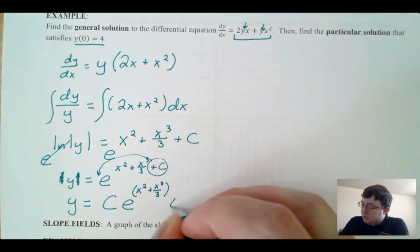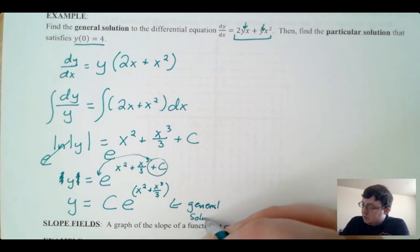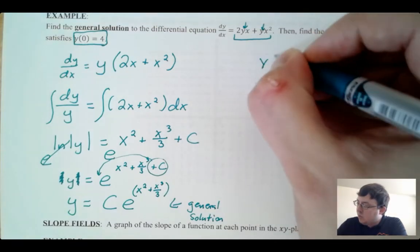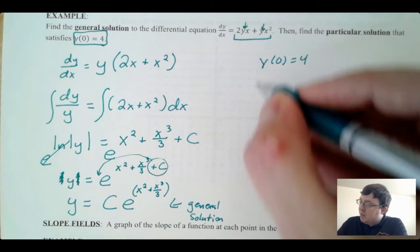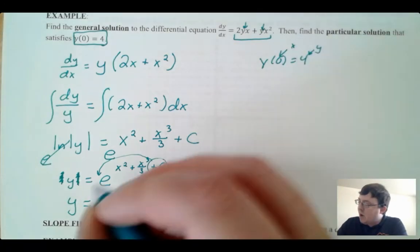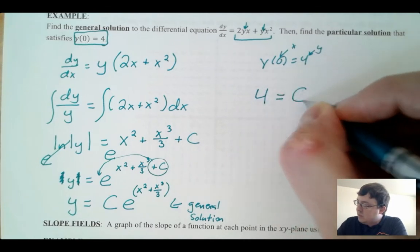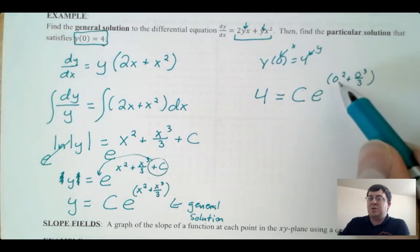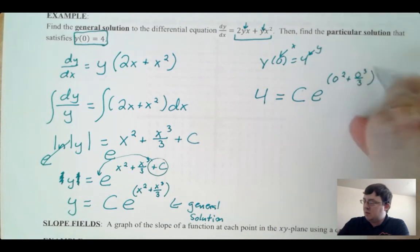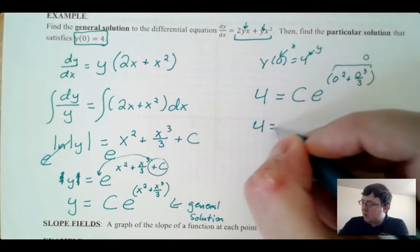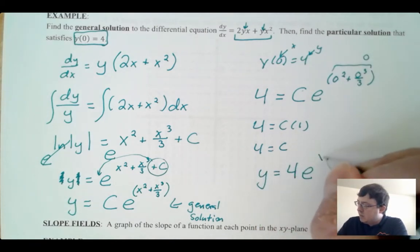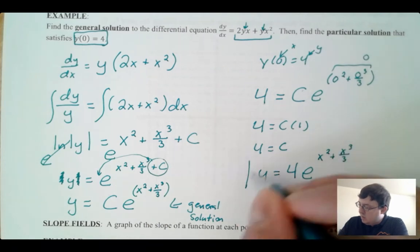For the particular solution I use the initial condition y(0) = 4. Plugging in x = 0 and y = 4: 4 = C·e^(0² + 0³/3) = C·e^0 = C·1, so C = 4. My particular solution is y = 4e^(x² + x³/3).